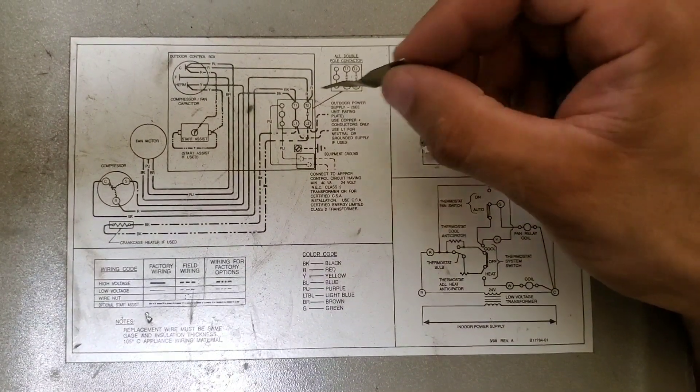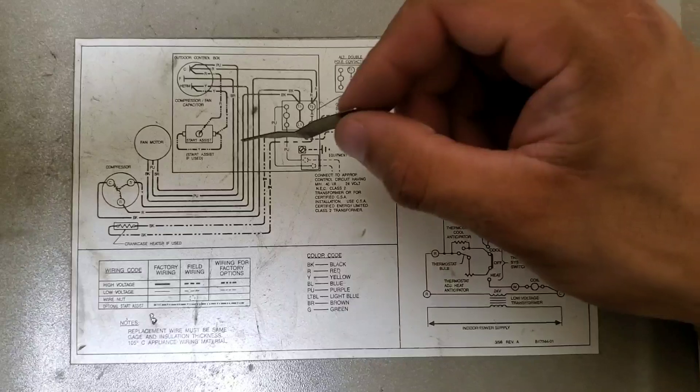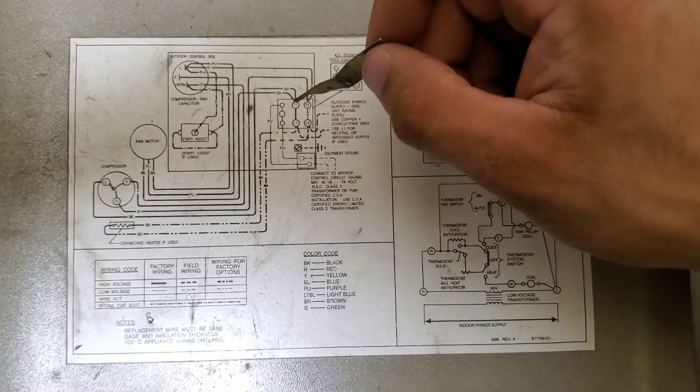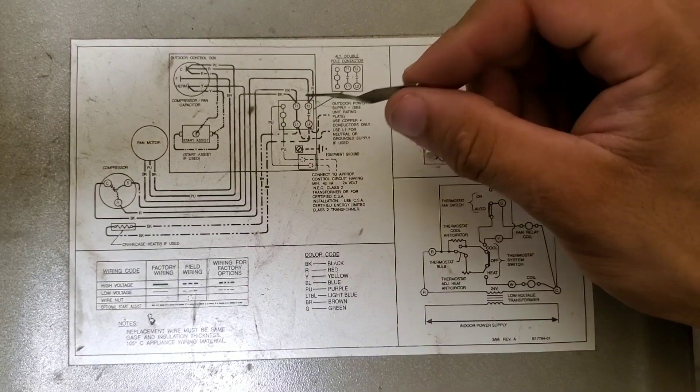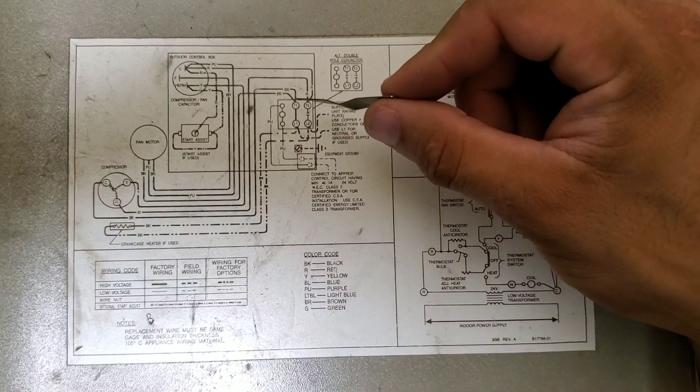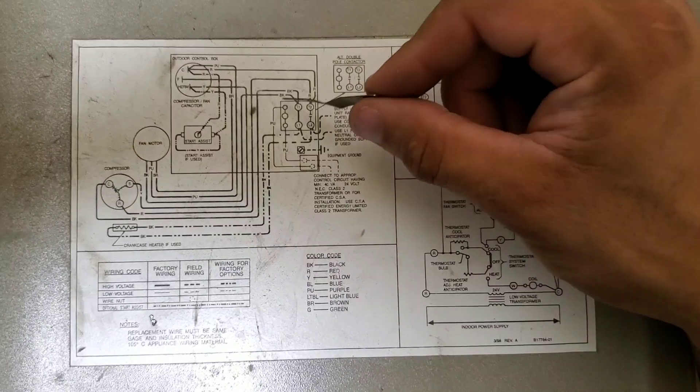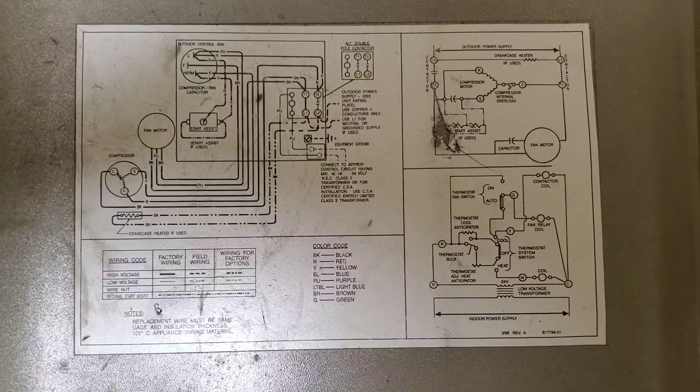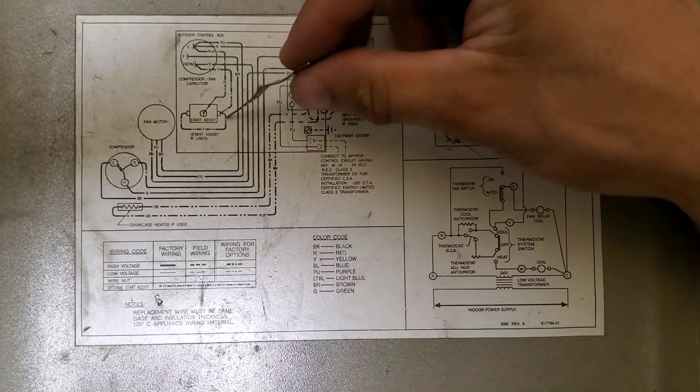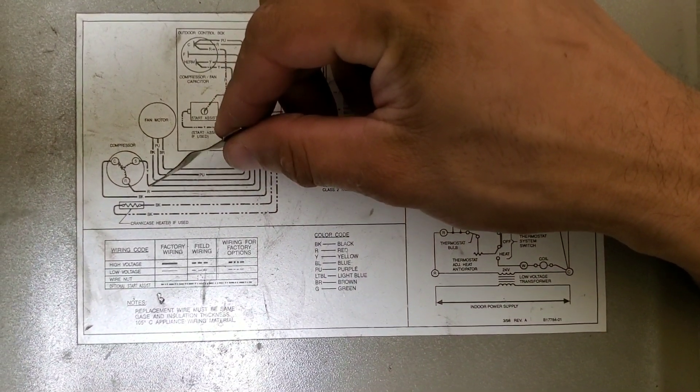One of the questions I often get in regards to comments on my channel is how to properly wire a compressor. A lot of times it's simply an issue of miswiring due to colors. If you look at the panel you'll see different colors.